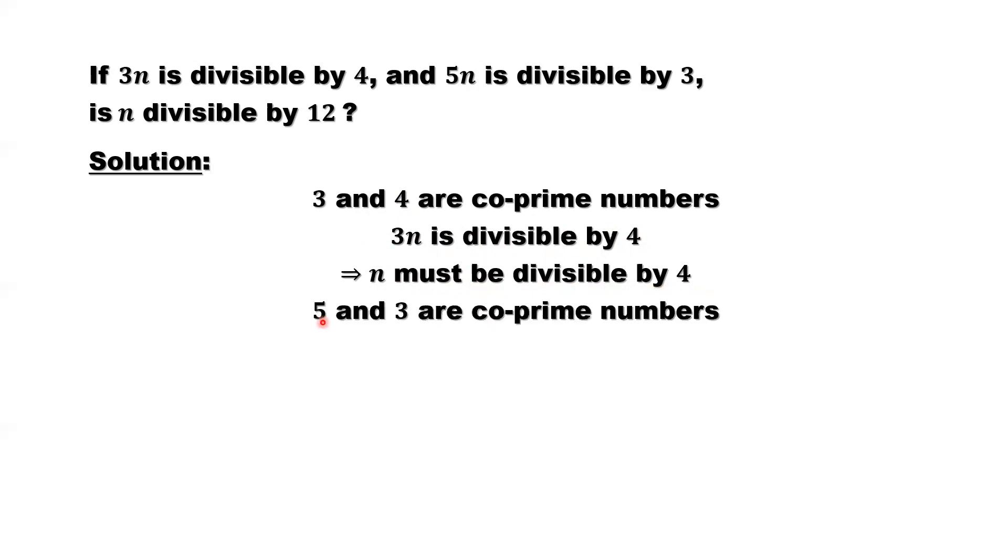Similarly, 5 and 3 are coprime numbers. Both are prime numbers. They are different, so they don't have common factors. 5n is divisible by 3. 5 is not divisible by 3. 5 and 3 have no common factors. So n must be divisible by 3.